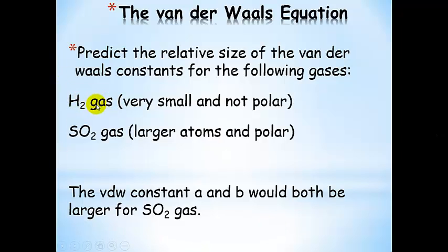Since hydrogen gas is very small and not polar, we would expect A to be small — that's the level of intermolecular attractions — and the size is very small so B would also be small. The Van der Waals constants A and B would both be larger for sulfur dioxide, since sulfur and oxygen are larger atoms making it a larger molecule, and it is polar.